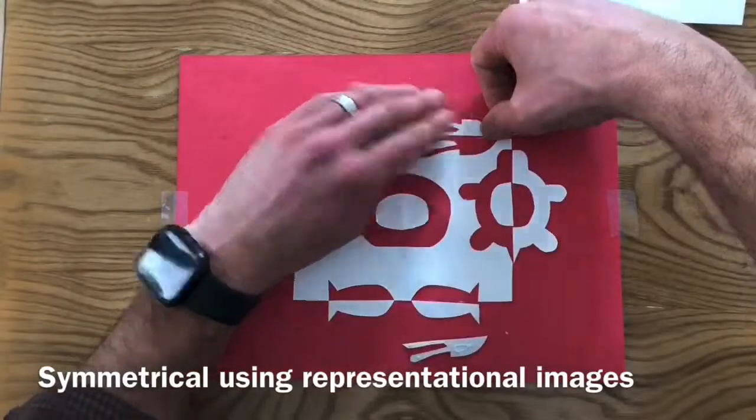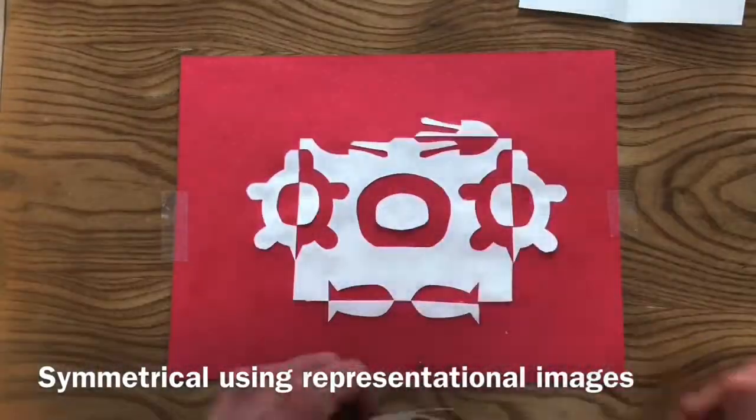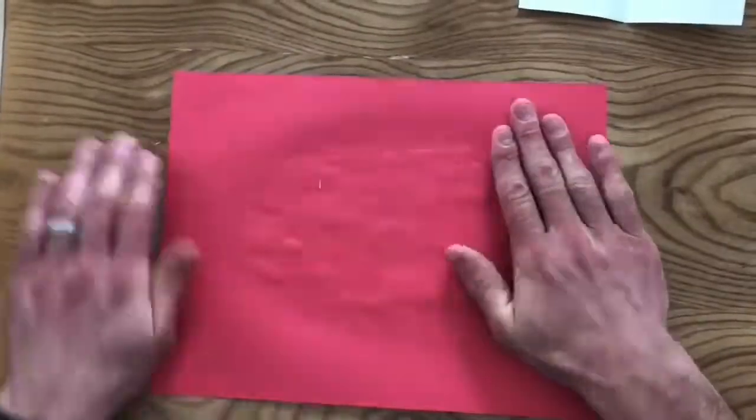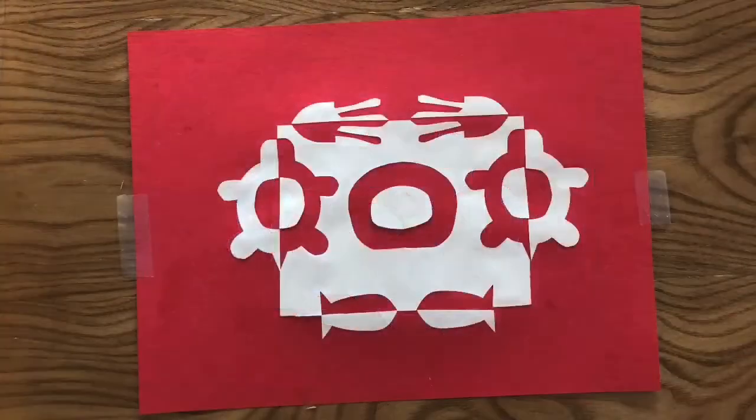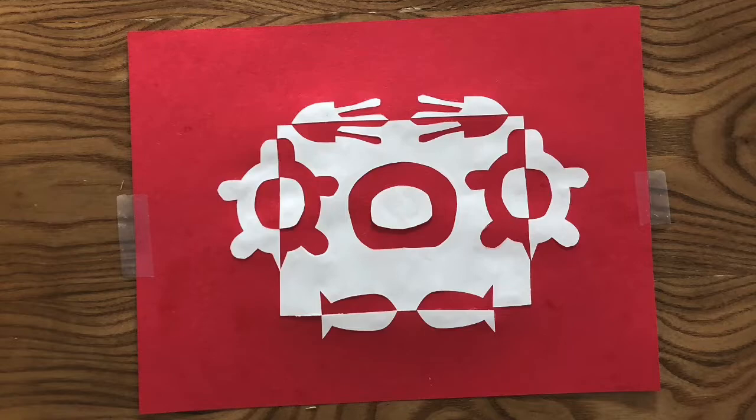Once you're done gluing down all of your pieces, be sure to flip your piece of paper over, rub the back to distribute the glue evenly, and then your design should be done. And that's how you create a symmetrical notan composition using representational objects.